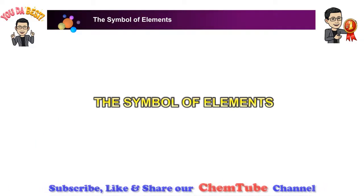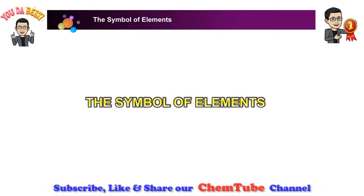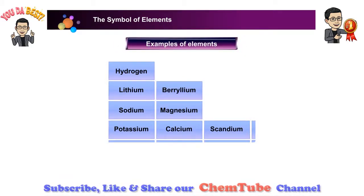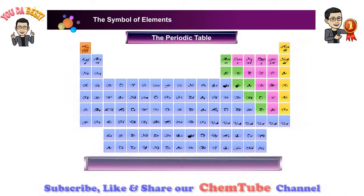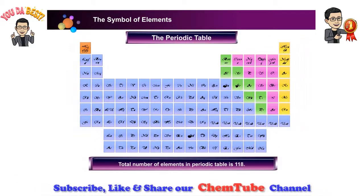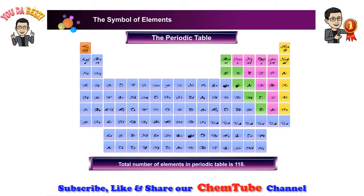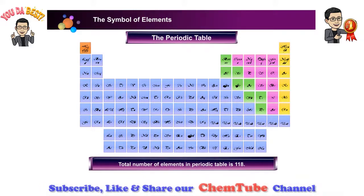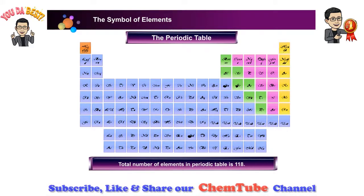The symbol of elements. These are some of the elements from the periodic table. The total number of elements in the periodic table is 118. What will happen if the names of the elements are written in full, like what you have seen on the screen? Do you have any suggestion on how to avoid writing down the names of the elements?